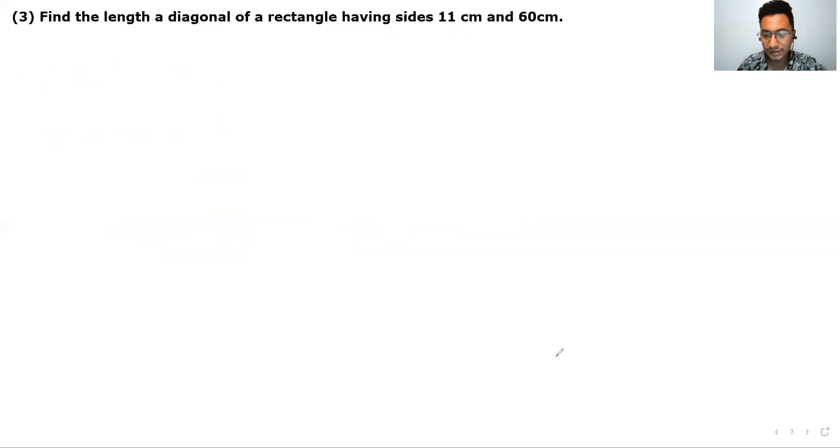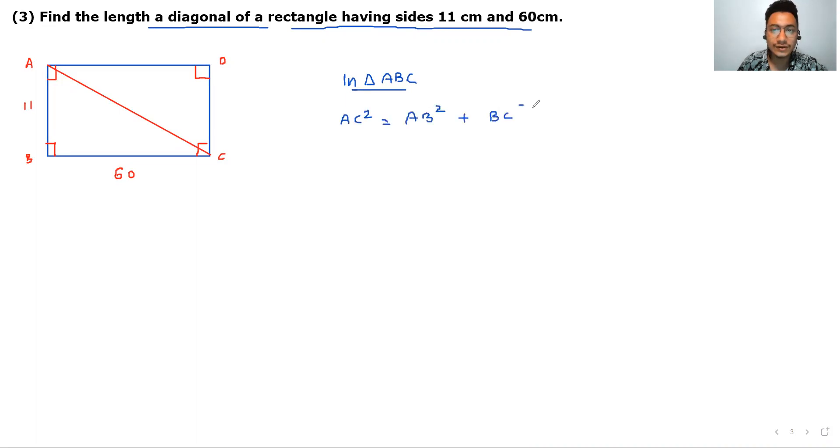Next question, question number three. Find the length of a diagonal of a rectangle having sides 11 and 60. You can draw the rectangle here. All angles make 90 degree. Now you have a diagonal. Find out the diagonal. One side is 11 and one side is 60. So apply Pythagoras. In triangle ABC, AC square is equals to AB square plus BC square.